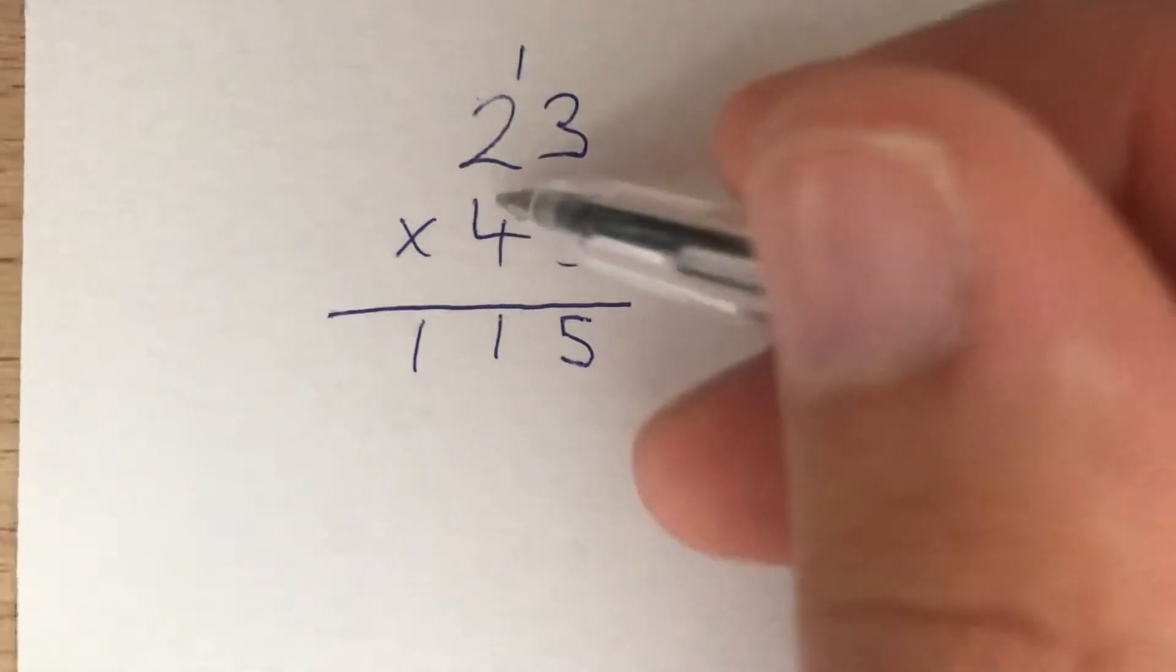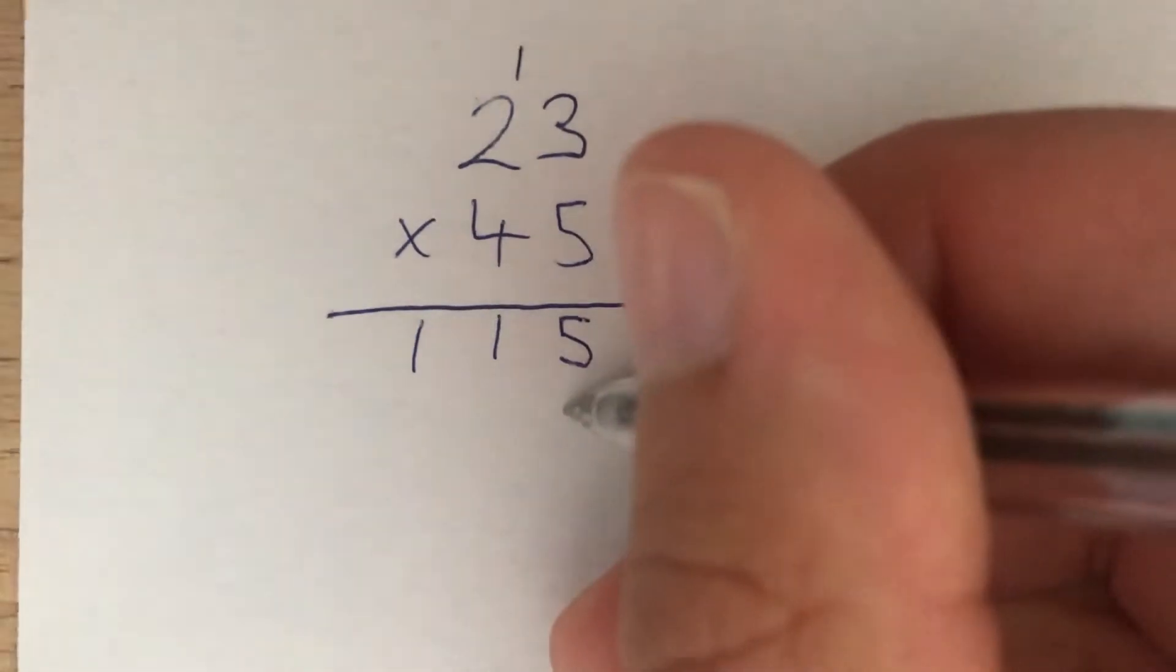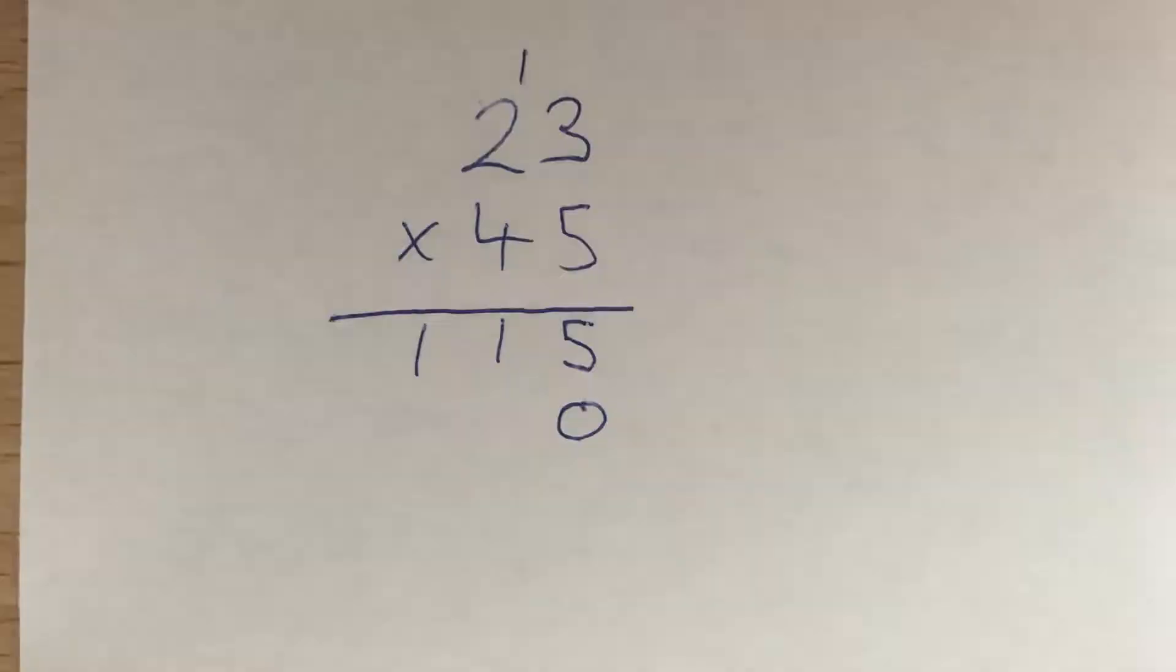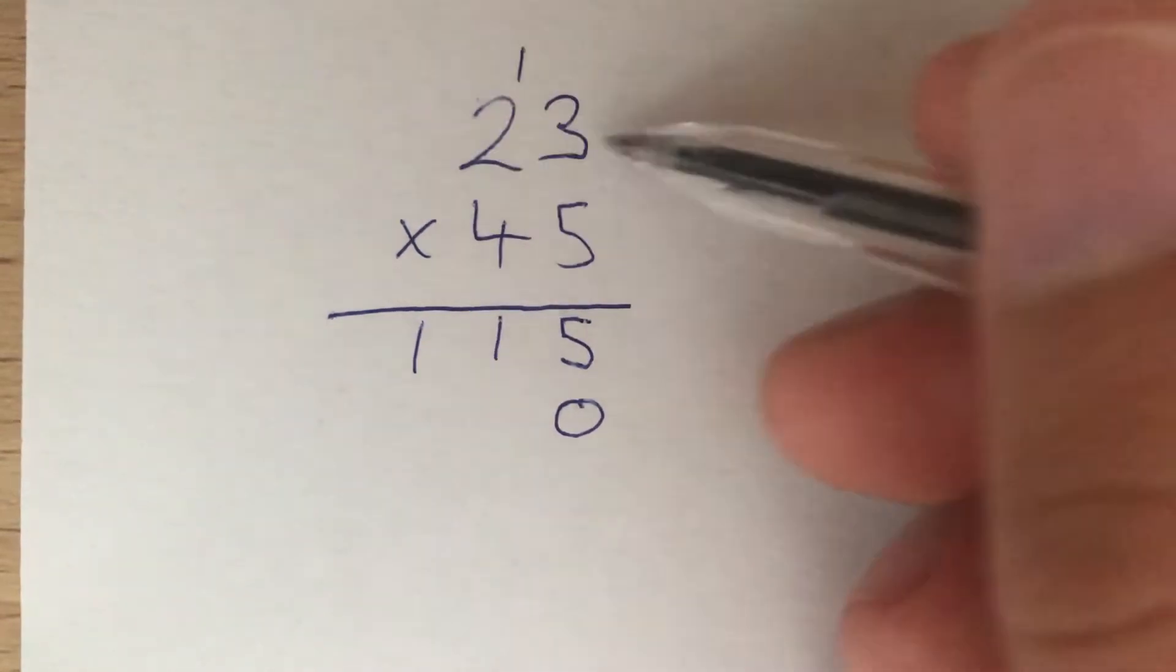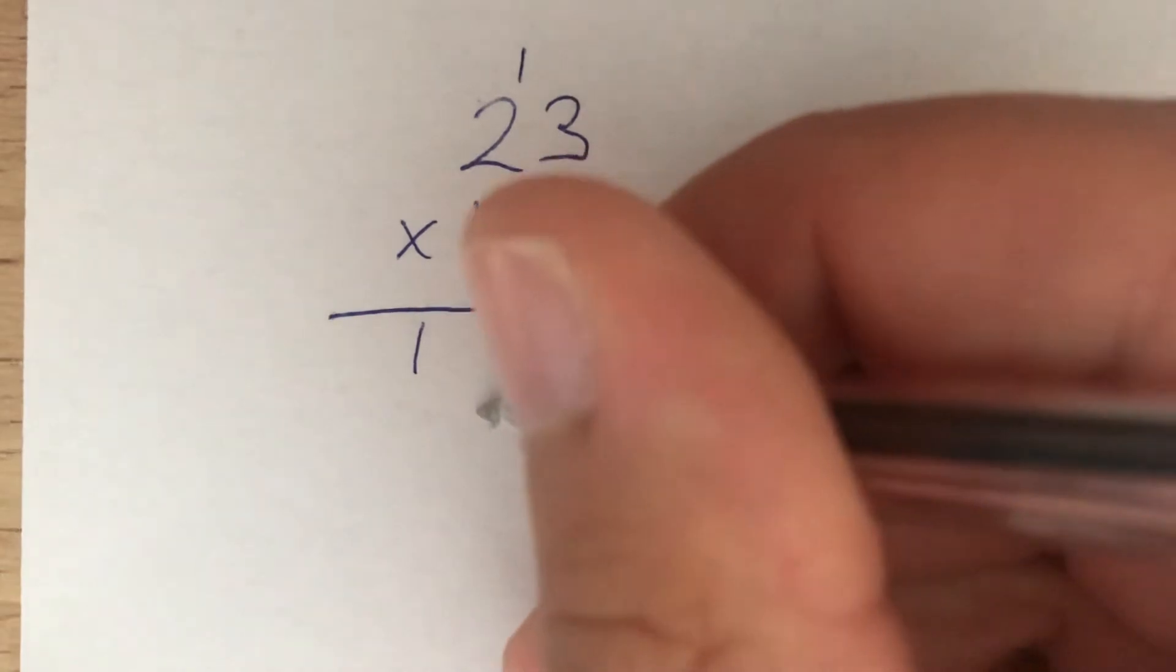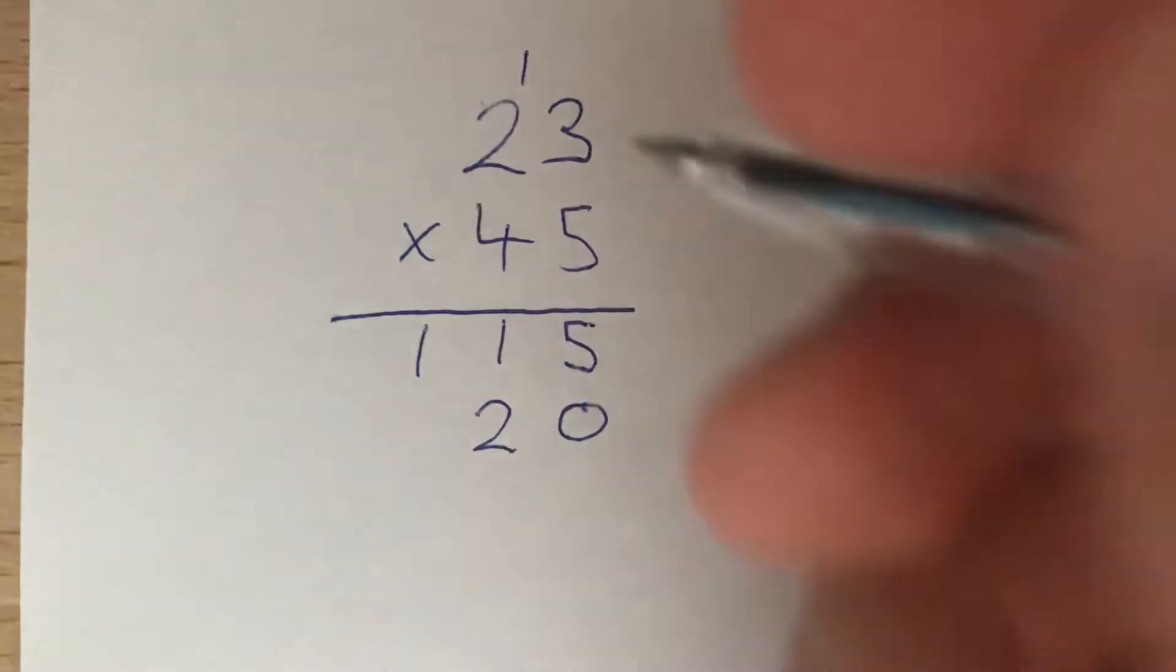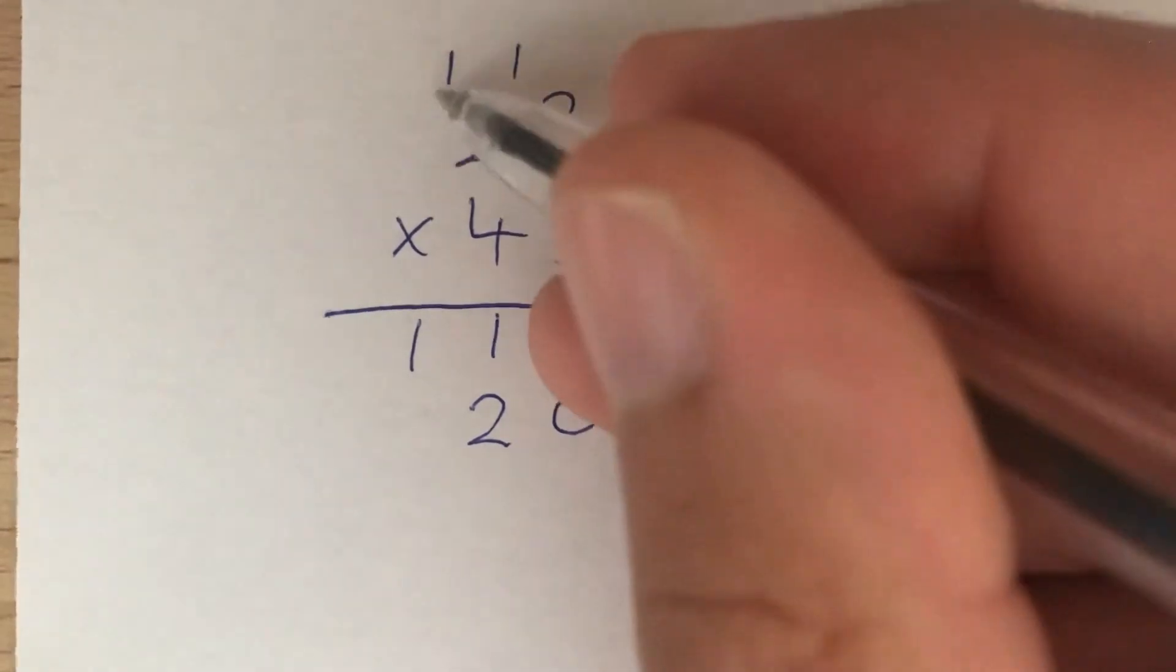Now we multiply this 4 by everything. But it's not really a 4, it's actually 40, so we need to put in a placeholder 0 to ensure we're multiplying by an extra 10. Then we multiply 40 by 23. 4 times 3 gives us 12, so we put the 2 down and carry the 1. Then 4 times 2 gives us 8, and we add the carried 1 to get 9.